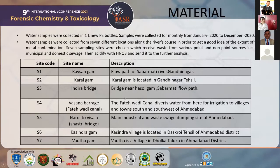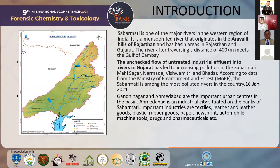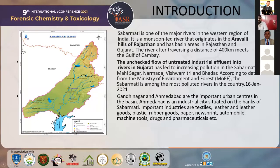This diagram table shows how the samples were collected. The Sabarmati river starts from the Aravalli hills of Rajasthan, then passes into Gujarat state, finally reaching the Ahmedabad and Gandhinagar basin area. We checked the flow of the water along the Sabarmati and collected samples one by one at seven different locations, starting from Raisan Gam.